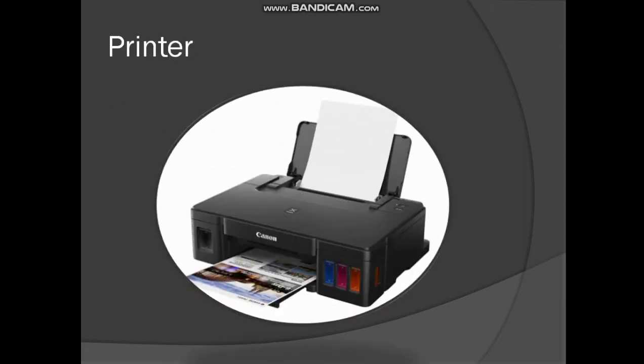The next output device is a printer. A printer is basically used to create a copy of whatever you send to the computer. If you have a document, a PDF file, or a picture in your computer, the printer will print it out. The pages that come out of the printer are known as hard copy or printout. There are many types of printers: laser printer, inkjet printer, and dot matrix printer. A printer is basically used to get a hard copy and is known as an output device.